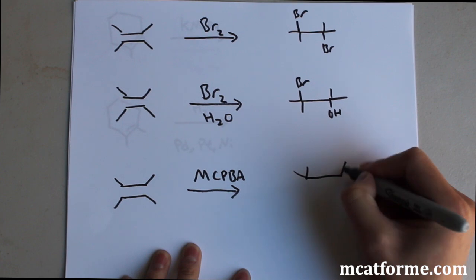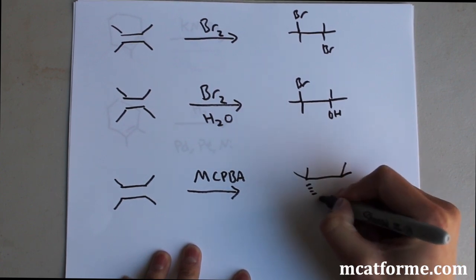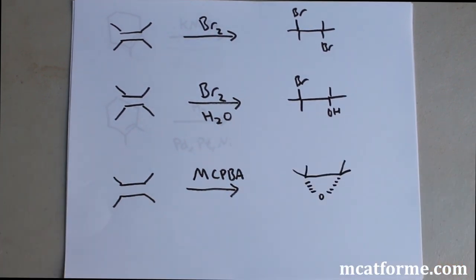In this one with MCPBA what's going to happen is we're going to form an epoxide ring. This is very important especially when we deal with epoxides later is how will these open up. So MCPBA will add an epoxide so we'll add an O.